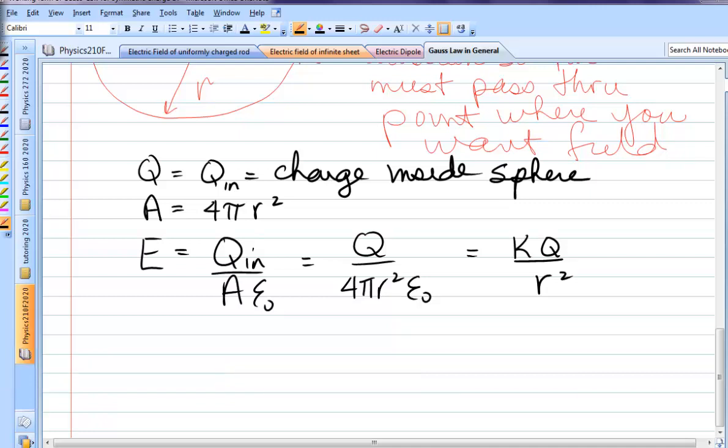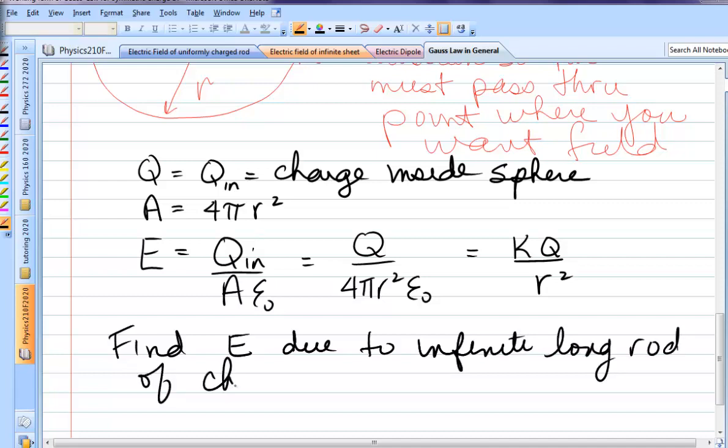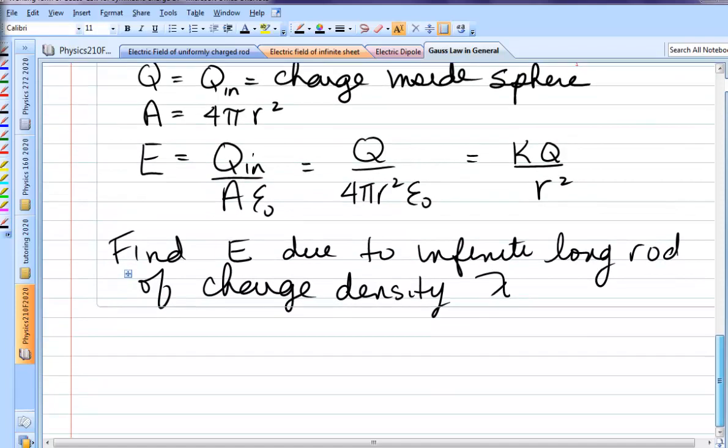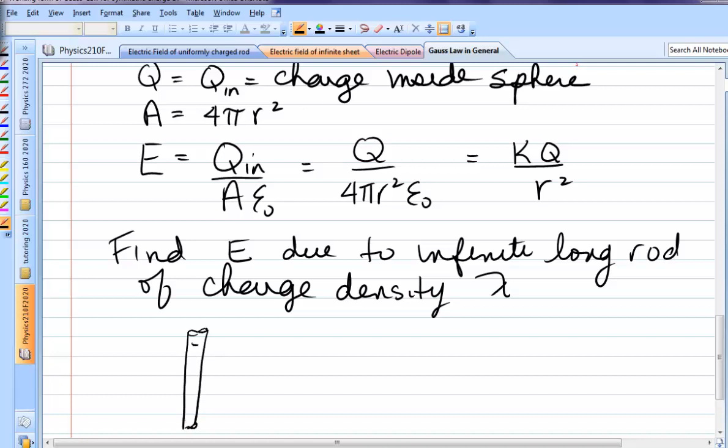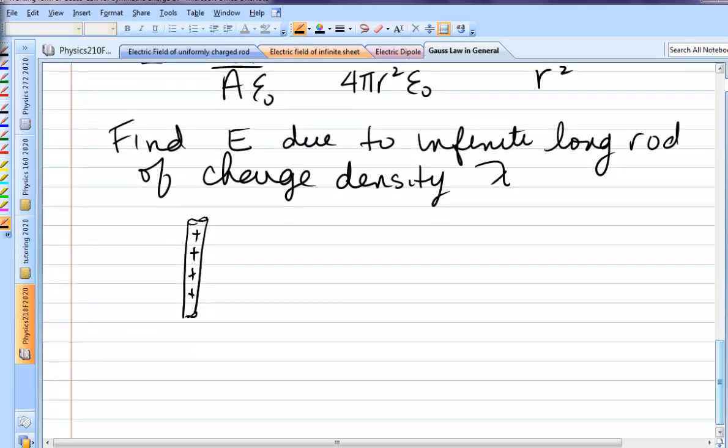So let's quickly do one where we're going to use a cylinder. Find E due to infinitely long rod, charge density lambda. Remember we did the electric field due to a charged rod previously, but that was a finite length charge rod. That's completely different than this infinitely long rod. To show it's infinitely long, I'll do that little infinity symbol here. And then we'll go down and do it at the other end as well. Obviously, you can't say what its total charge is because it's infinitely long. So, it has an infinite amount of charge. But you can be told the charge density.